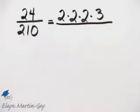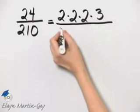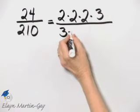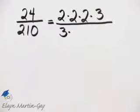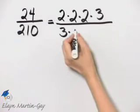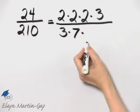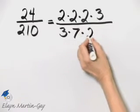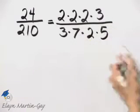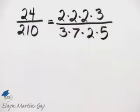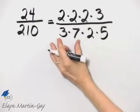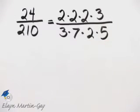Now let's write the prime factorization of 210. I know 3 divides into 210 70 times, and then what is 70? 70 is 7 times 10, and then 10 is 2 times 5. Again, double check and make sure, but notice this is 21 times 10, and 21 times 10 is certainly 210.